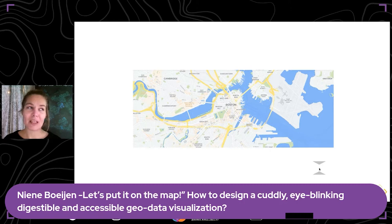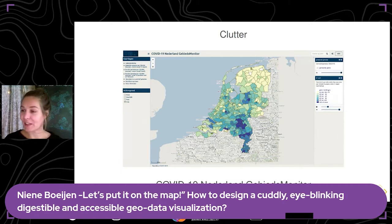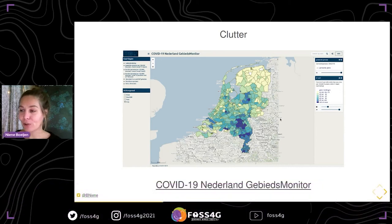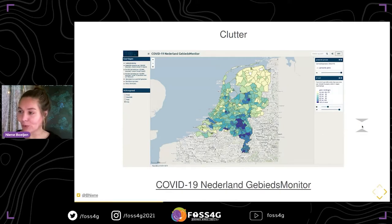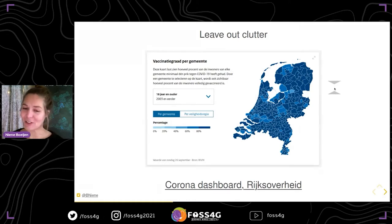Next to making the map integrate with your application, we also have to look at the map itself. One tip I really want to share: leave out all the clutter — just visualize on the map what you need. For example, this application shows municipality data but plots it on top of a topographic map. For showing summaries of municipalities, we do not need all the topographic labels. Maybe we could just not show a background map at all, leave out all the labels, like this other application which just shows the values.